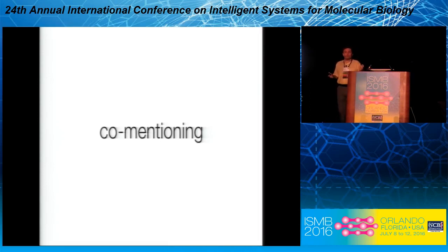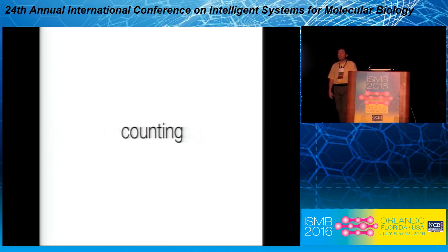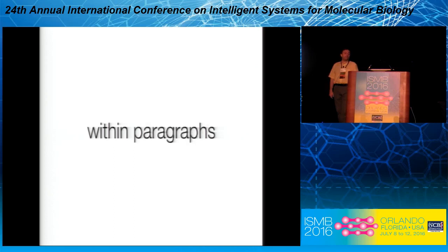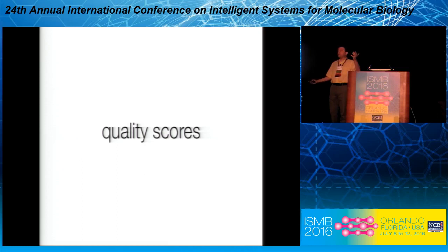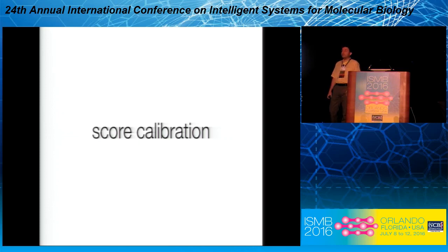We need to somehow score co-mentioning. When you have co-mentioning, you could easily have two genes mentioned together randomly without it meaning anything. What we do is fancy statistics — also known as counting — and we count how often they're mentioned together within the same document, how often within the same paragraph, and how often within the same sentence. We combine all of that into a combined quality score summarizing how strongly co-mentioned the two genes are, knowing that being mentioned in the same sentence is much stronger evidence than being mentioned in completely different paragraphs. We then calibrate these scores against the very same gold standard, so it also becomes probability of being on the same pathway given that level of co-mention.